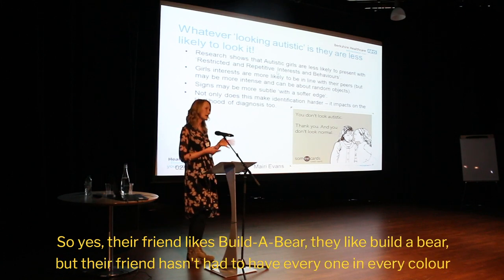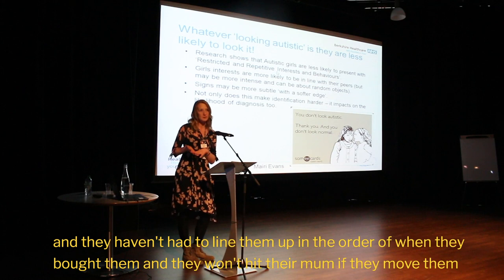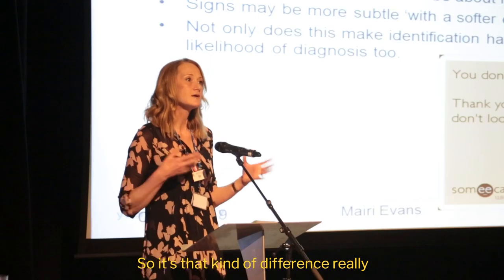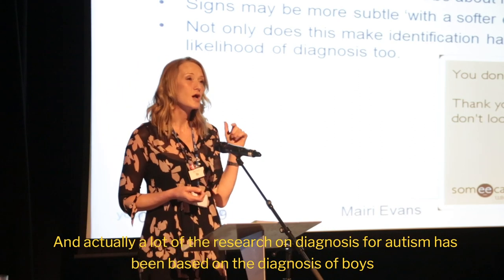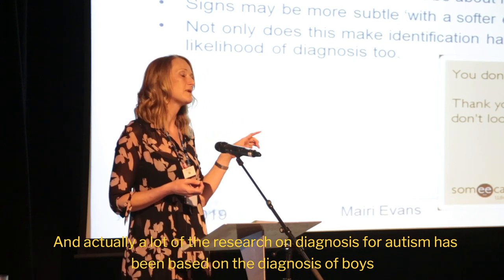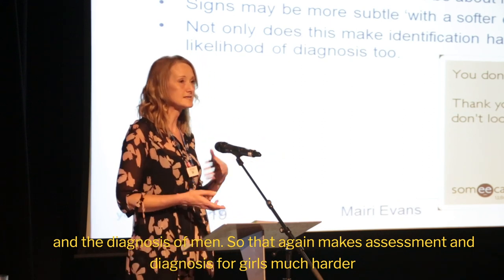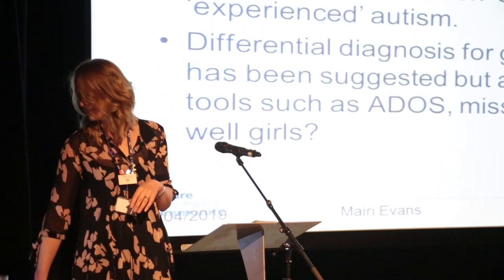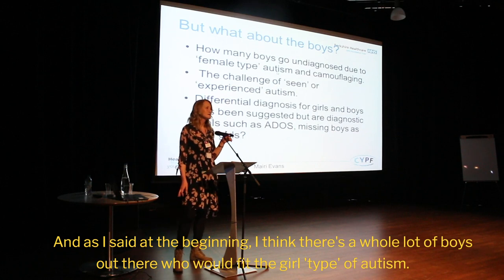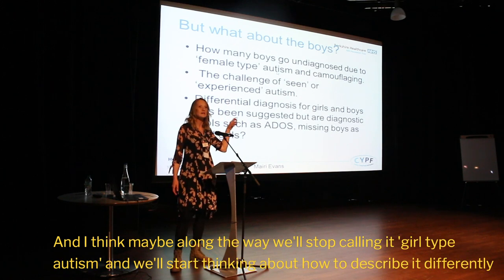Their interests are likely to be more in line with their peers. Their friend likes Build-A-Bear, they like Build-A-Bear — but their friend hasn't had to have one in every colour, hasn't had to line them up in the order they were bought, and won't hit their mum if they get moved. A lot of the research on Autism diagnosis has been based on boys and men, which makes assessment and diagnosis for girls much harder. I think there are boys out there who fit the girl type of Autism, and along the way we'll stop calling it that and describe it very differently.